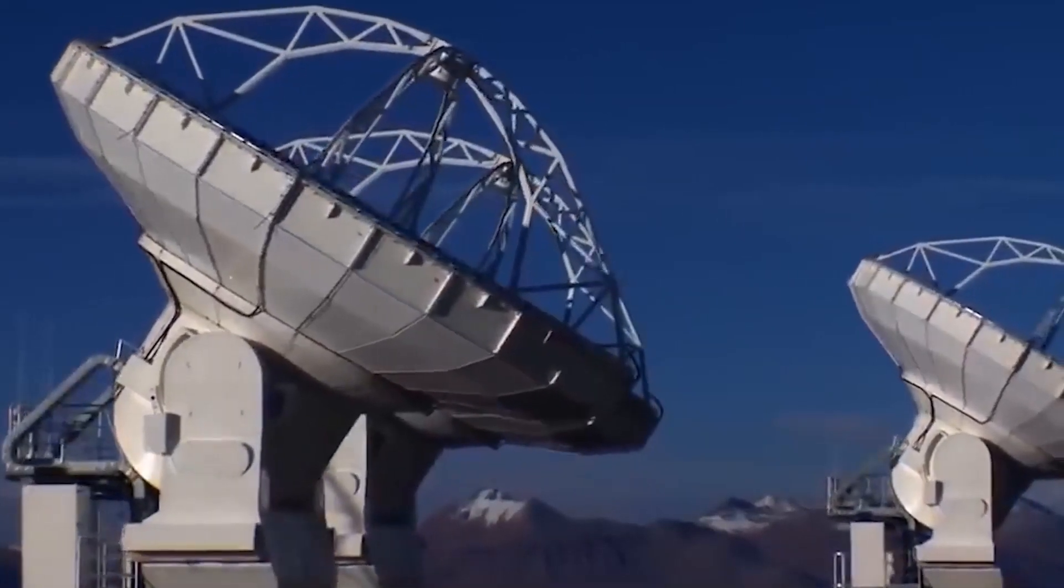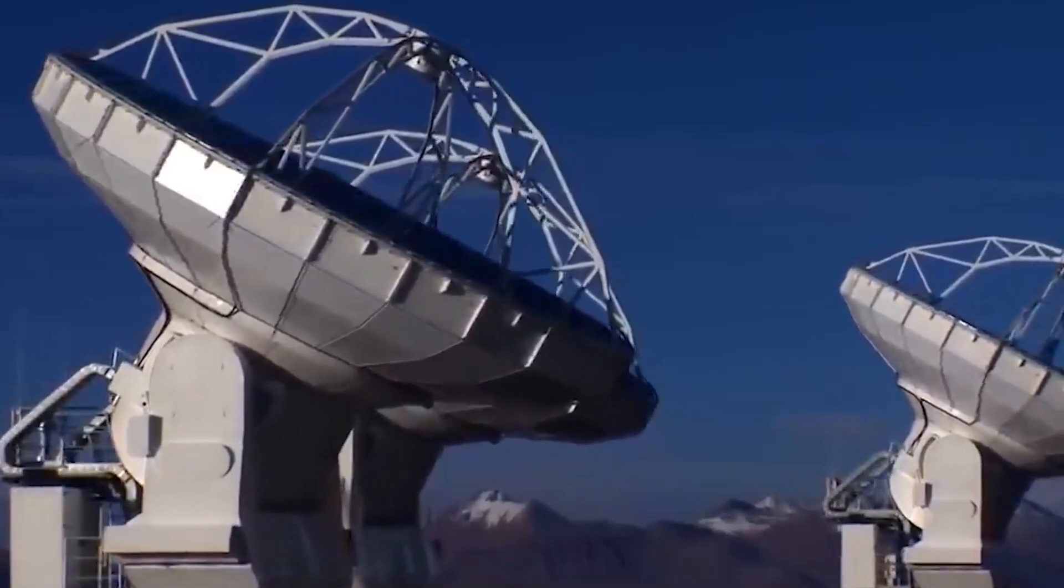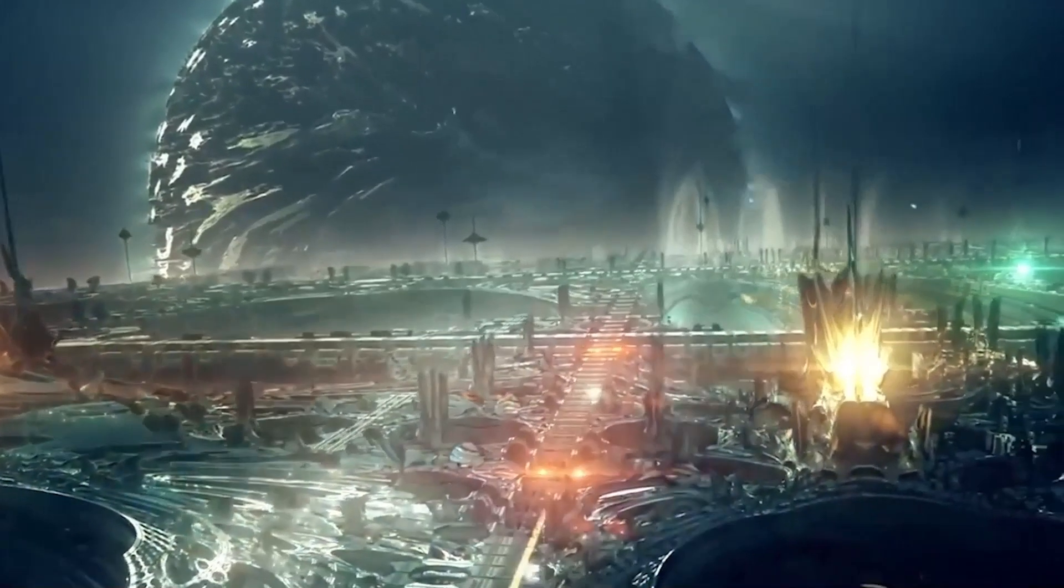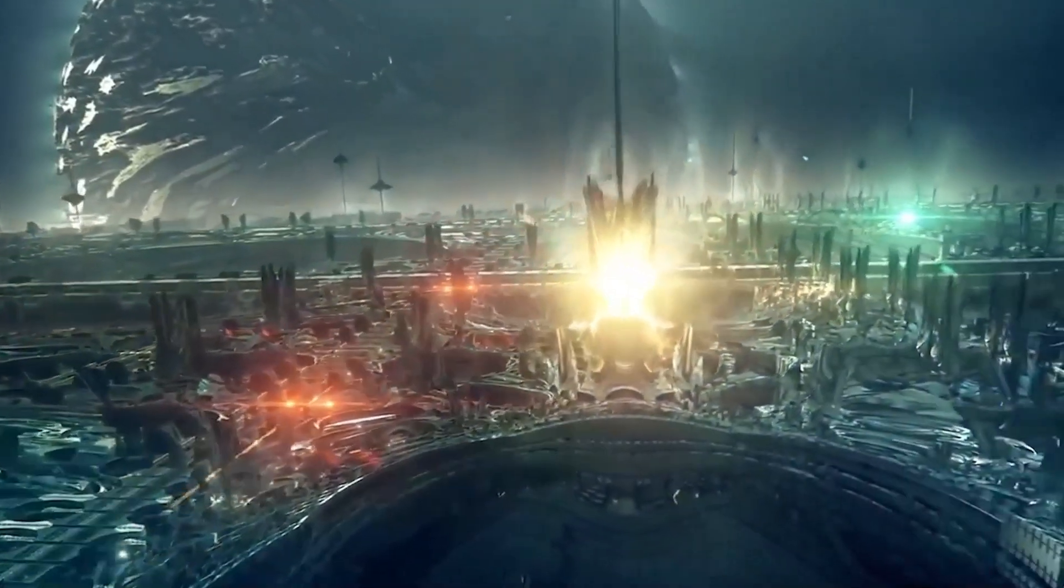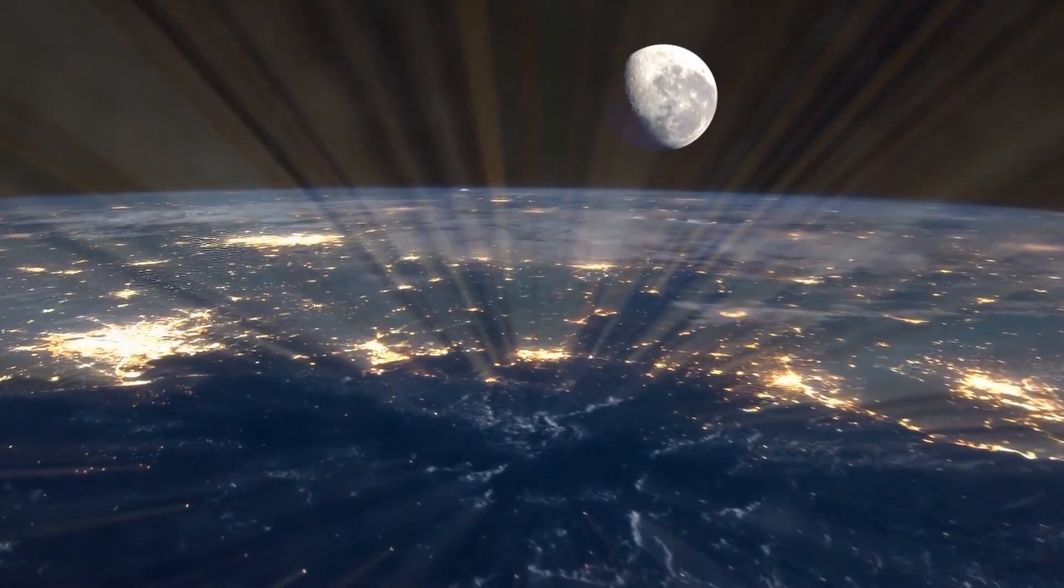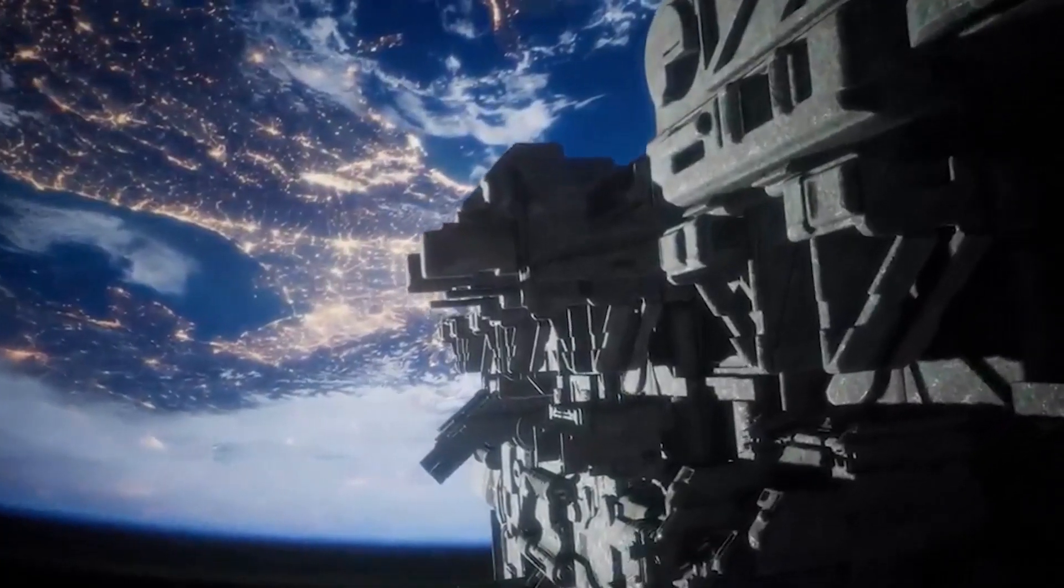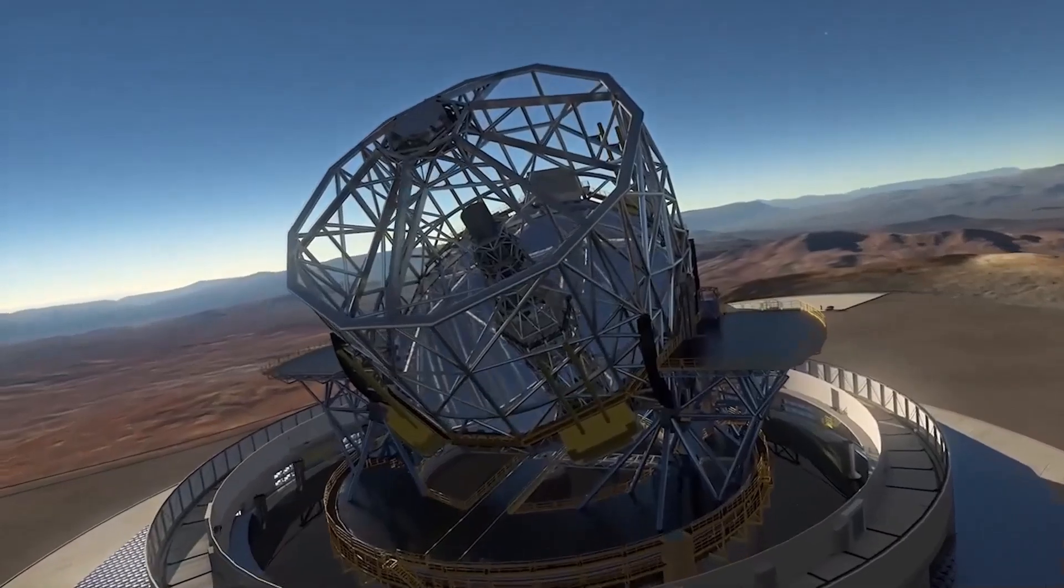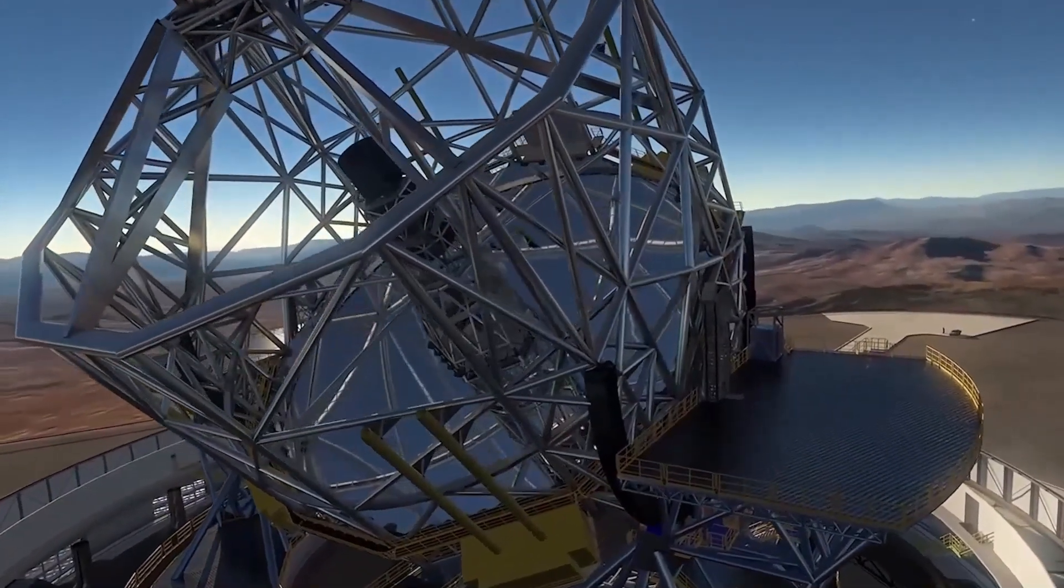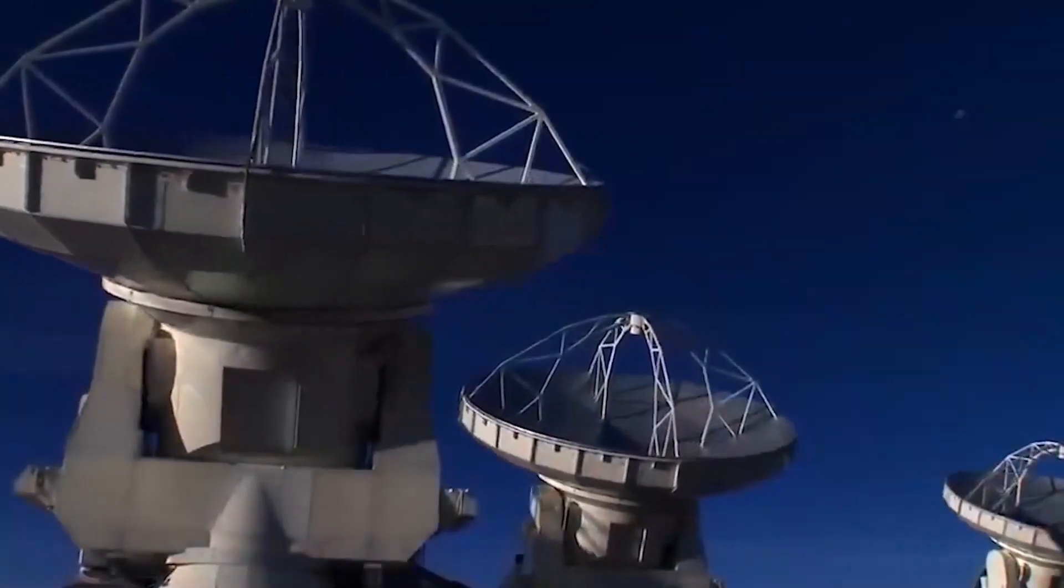So why not just look straight at the planets in Proxima Centauri to discover if there is civilization there? The radiance from our planet's night sight is the most obvious indicator that someone lives there from space. Light from our cities is emitted into space. The issue is that the telescopes of today's generation lack the power to detect lights in other solar systems.